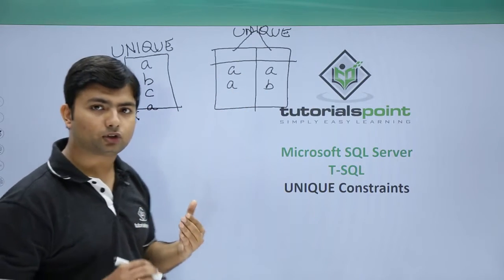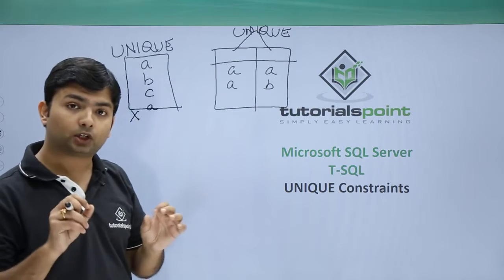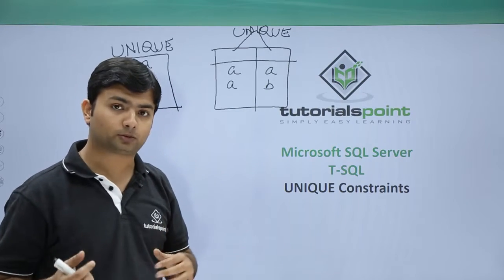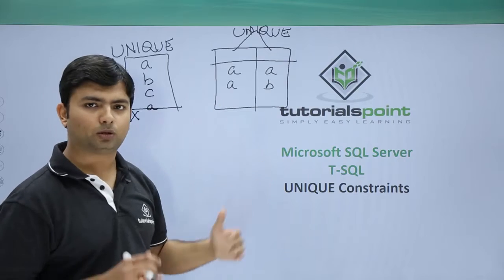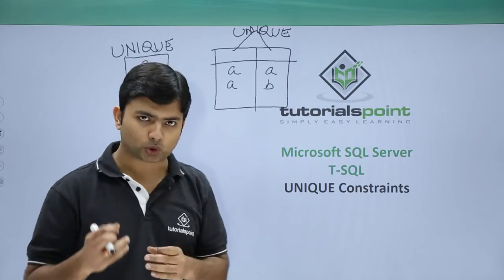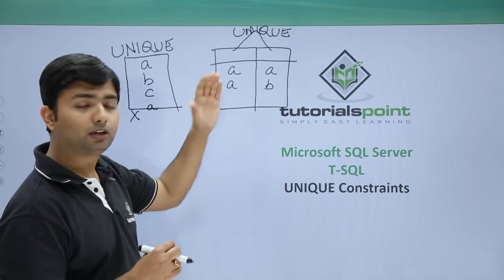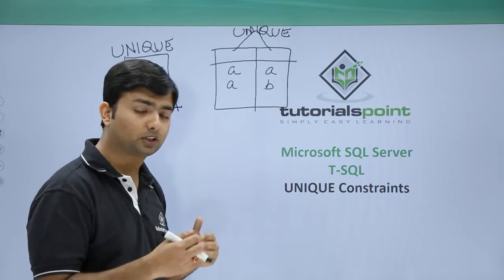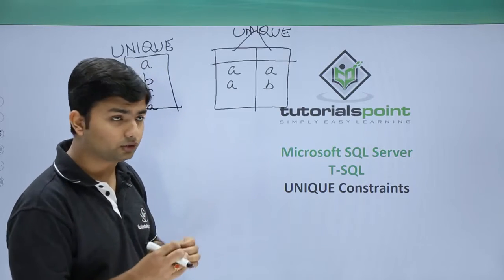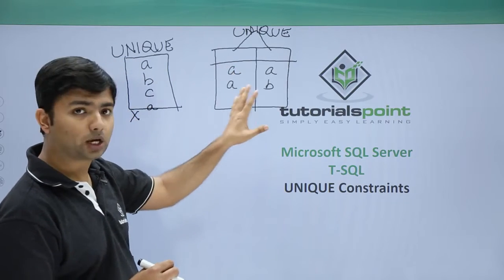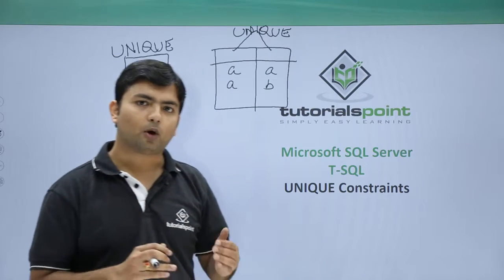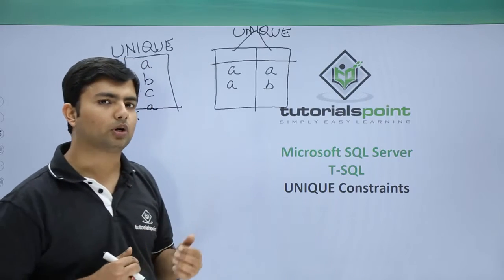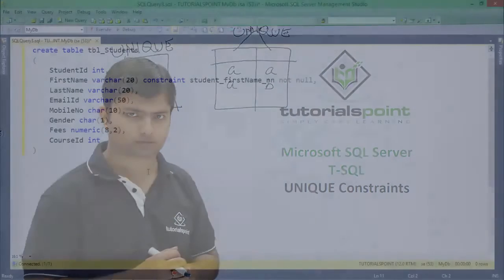When you apply a constraint at the table level and pass multiple column names, the unique combination of those columns is what gets checked. Make sure you have a genuine requirement before using multi-column table-level constraints. Now let's see practically how to work with the unique constraint.